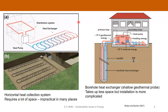Here are how some of these shallow geothermal systems work. There's a horizontal heat collection system — a series of coils buried a meter or two below the surface that act as a heat exchanger. You pump cool working fluid through the heat exchanger, it absorbs heat from the subsurface, comes back through your heat pump, and you transfer that heat to your house's distribution system. This is a simple system but it requires a lot of space — maybe a couple hundred square feet — so it's not feasible in dense urban areas, but works well in rural settings.